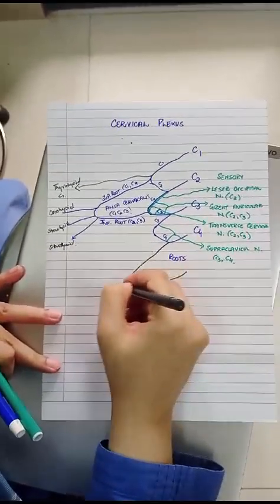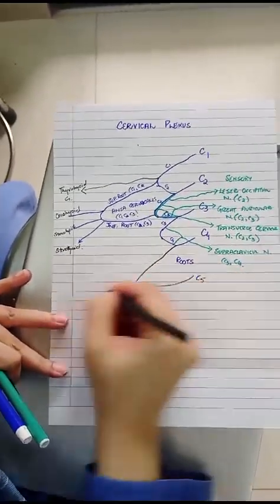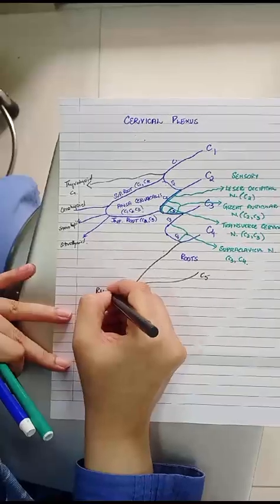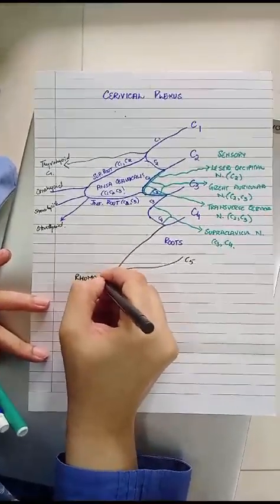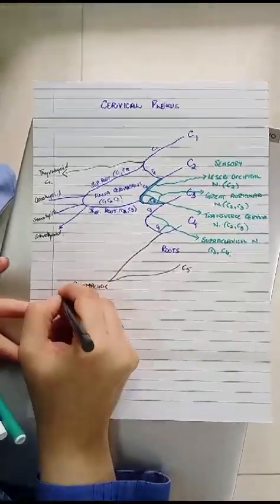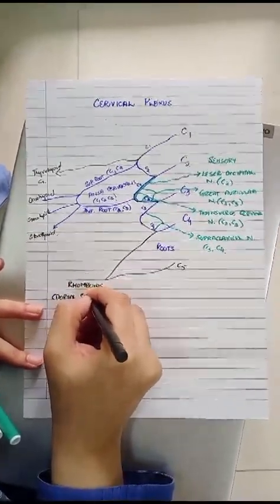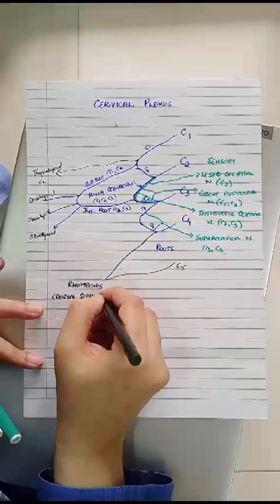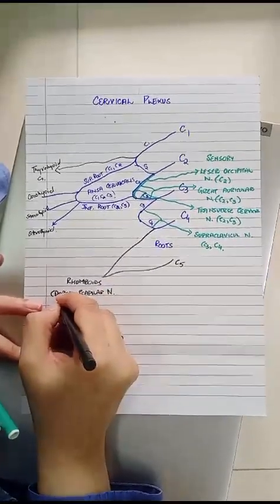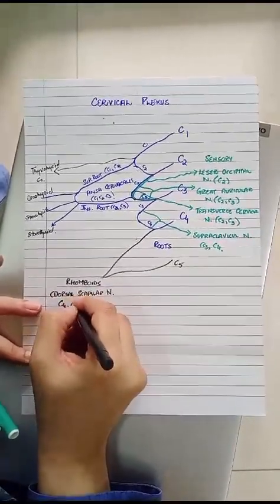C4 and contribution from C5 supplies the rhomboids and the name of that nerve is dorsal scapular nerve. Root value would be C4 and C5.